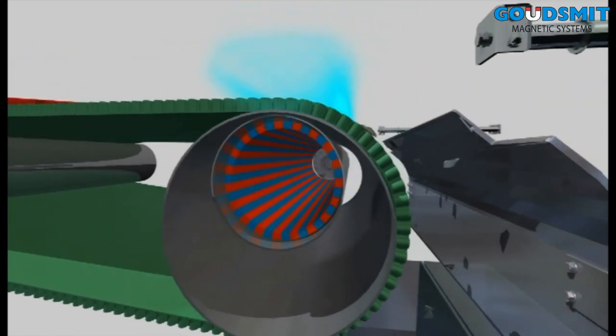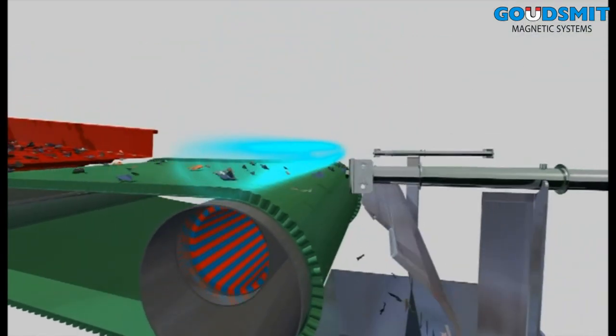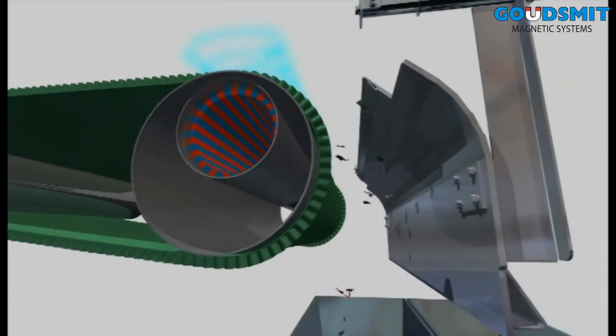The eddy current separator is built according to the eccentric magnet rotor principle. This technique prevents the weld penetration of the iron particles on the magnet rotor.